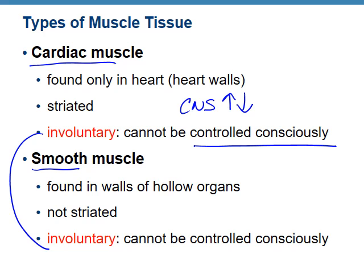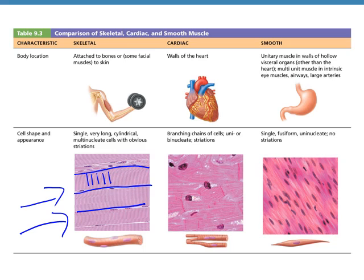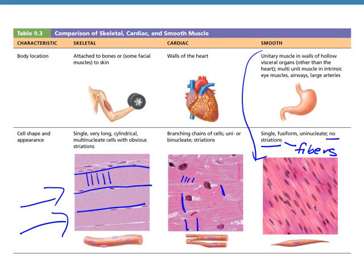Your central nervous system or brain can cause contraction or relaxation, but you cannot will the muscle to contract. If you tried to tell your heart to stop beating, you wouldn't be able to do that. It's still controlled by your brain, but you don't have conscious control over the action. Looking at the table from your textbook, in skeletal we have striations and fibers can be really long. In cardiac, we have gap junctions that allow cardiac muscles to communicate, still with striations. Smooth muscle is called smooth because you do not see striations, and it is set up differently — we'll discuss why at the end of this lecture.